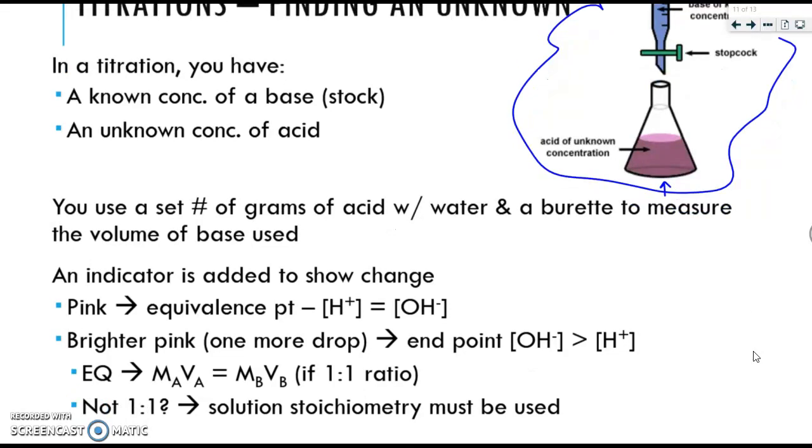So the equation here should look very familiar to you. MAVA equals MBVB. It's pretty much the same thing as M₁V₁ equals M₂V₂. So if you have a 1 to 1 ratio of H to OH, meaning your acid has 1 H and your base has 1 OH, or 2 and 2, or 3 and 3, you can use this equation.